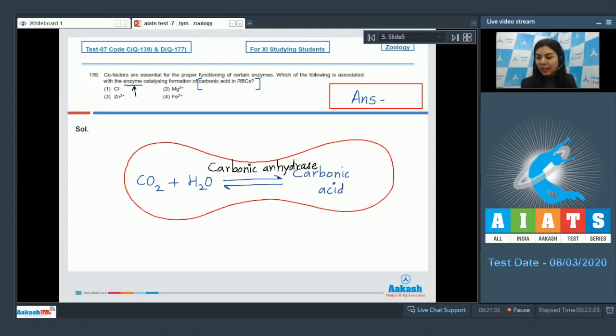This particular enzyme carbonic anhydrase is present in high concentration in RBC, and for this reaction to occur, the presence of zinc ions is essential. Zinc ions act as a cofactor for this enzyme. The correct answer here is option number three, zinc ions. Let's look at the other three options. Option number one, chloride ions are found in extracellular fluid, whereas magnesium ions act as an activator for hexokinase, and ferrous is found in heme. The right answer is option number three, zinc ion.